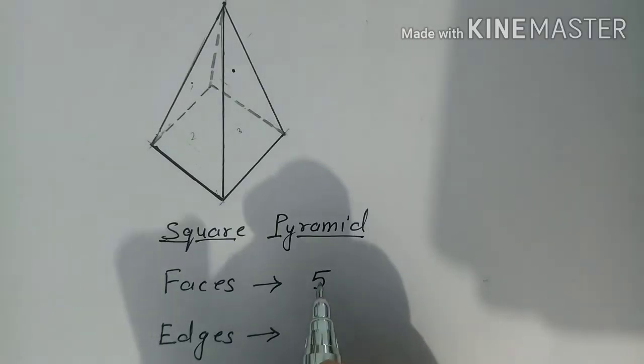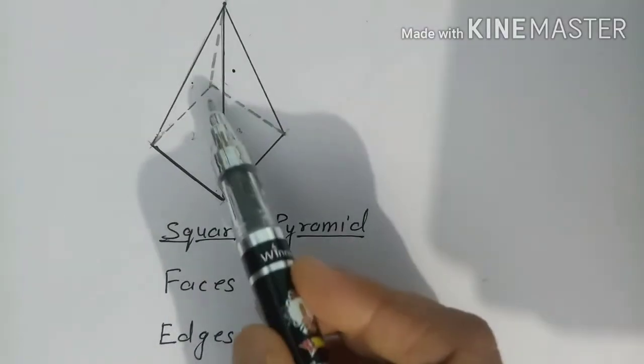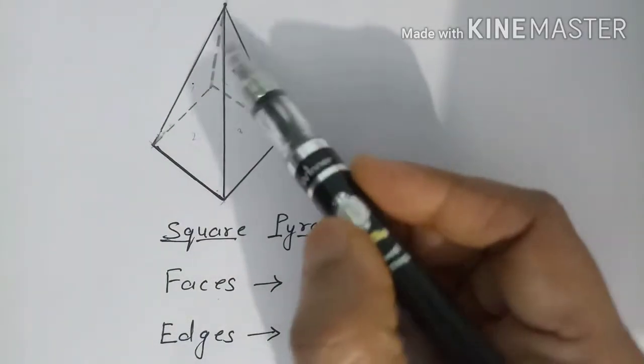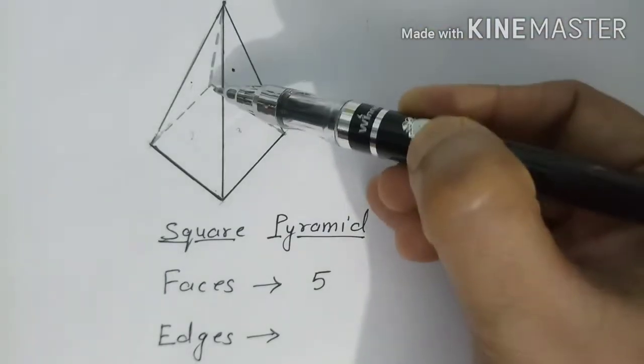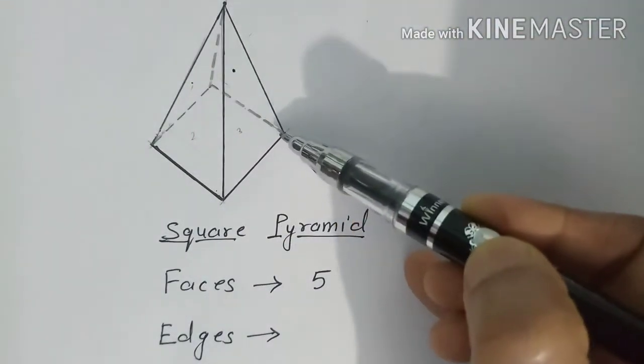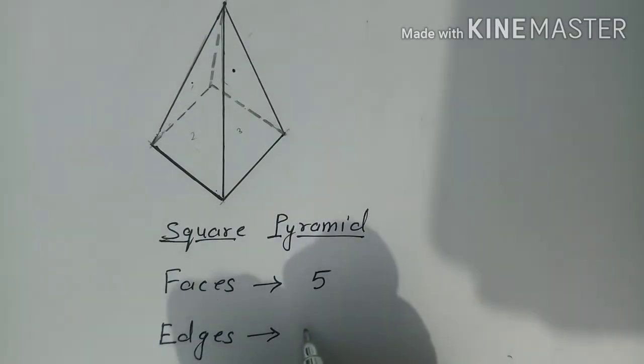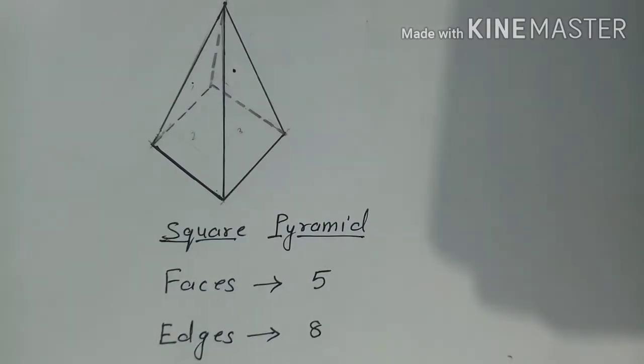Now we are going to count the edges. What are the edges? We have lines. We count 1, 2, 3, 4, 5, 6, 7 and 8. So how many edges are there? Total eight edges are there.